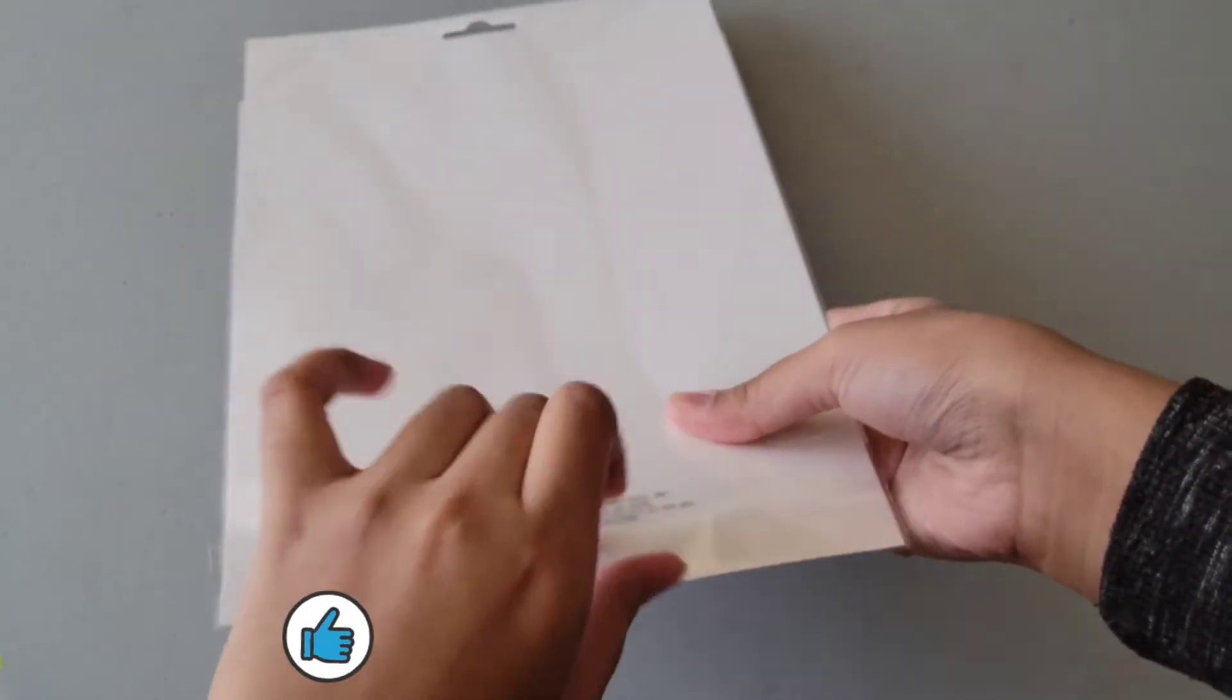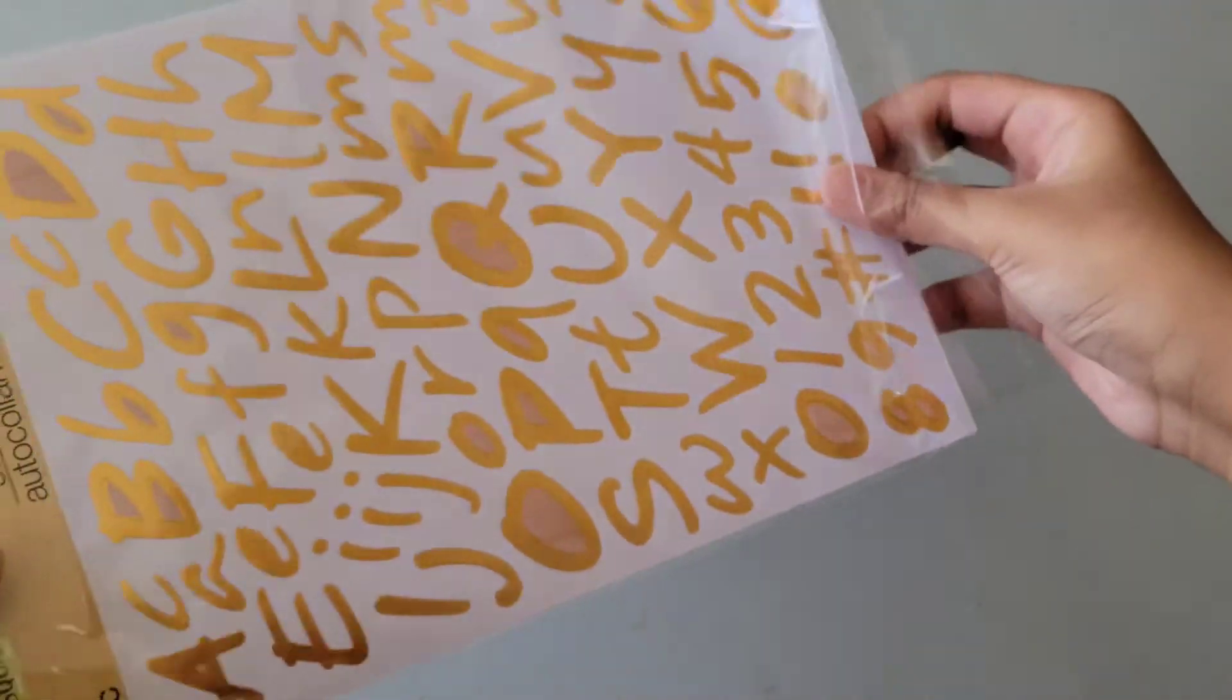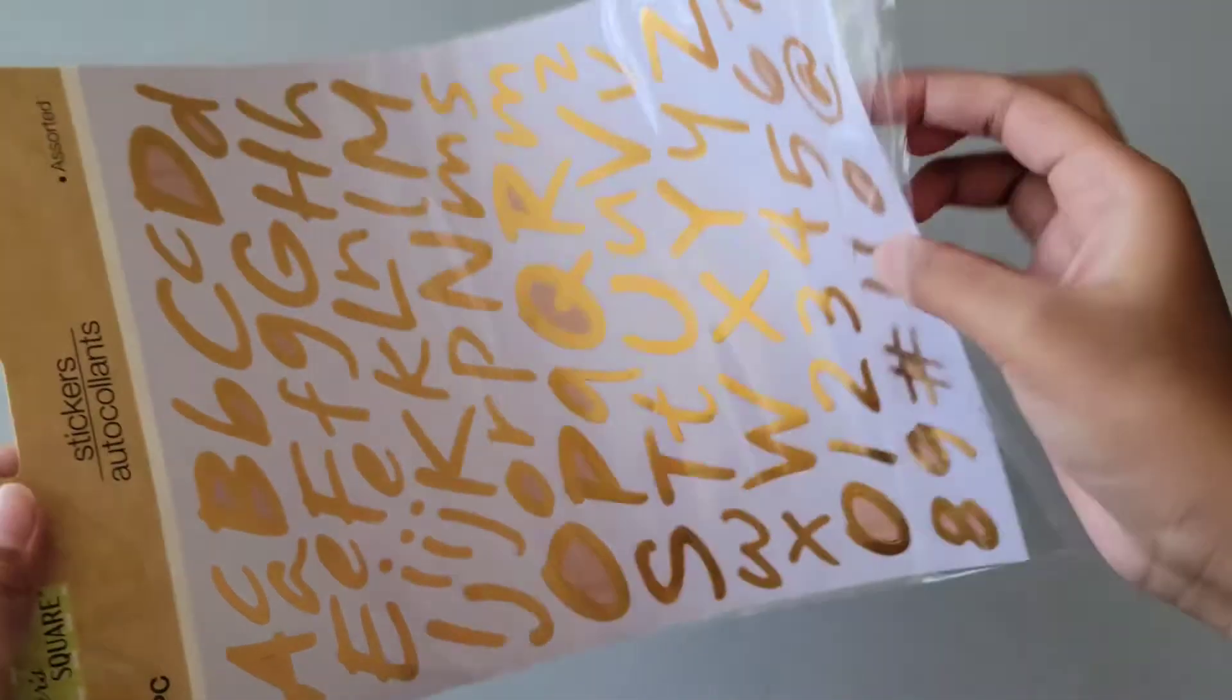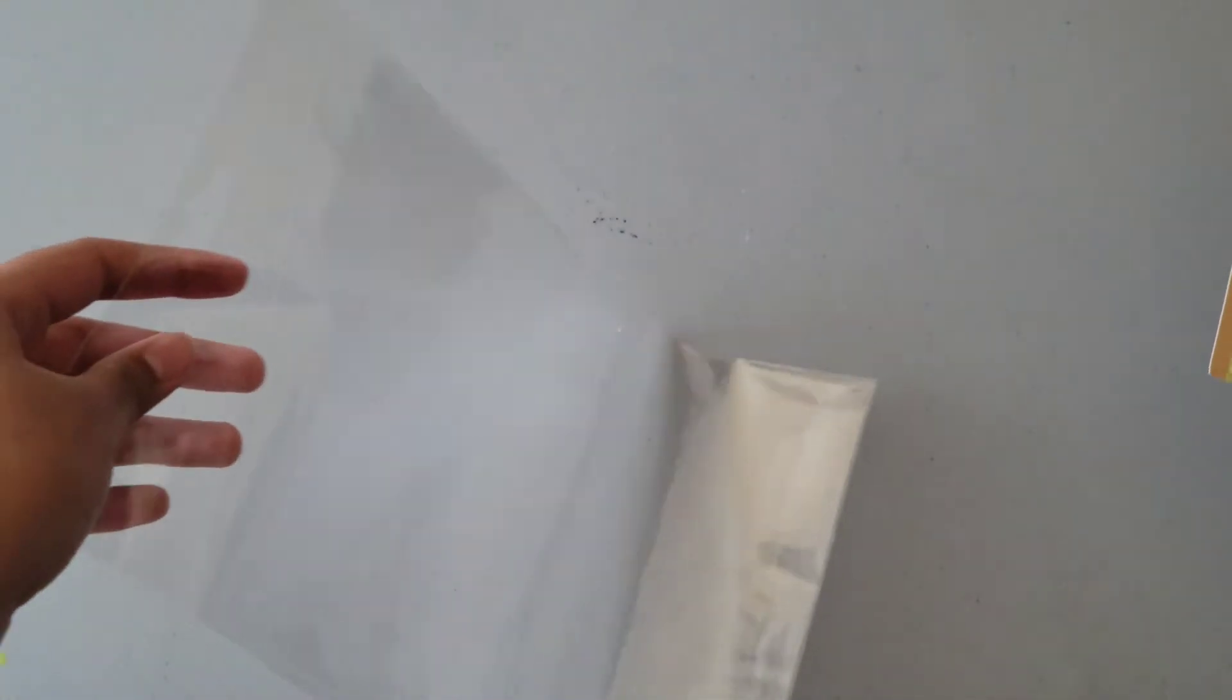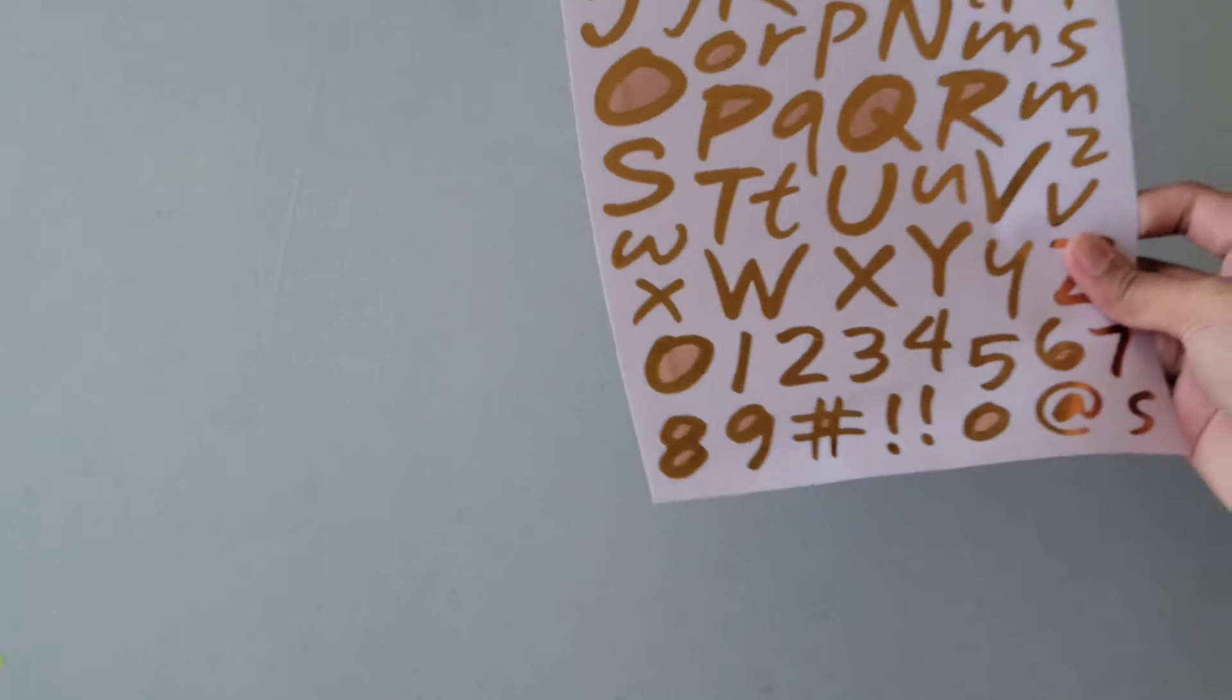Now let's just open it up. So, that is how it looks like. I'm just going to be taking it out. That is the plastic coverage, and there is only one sheet in this.